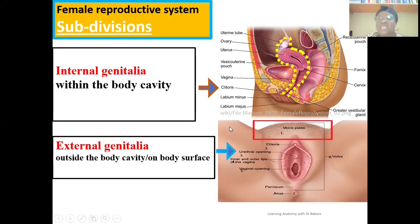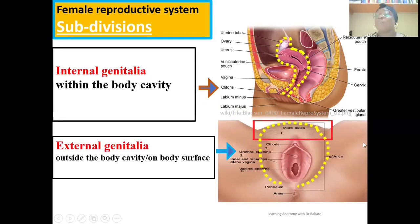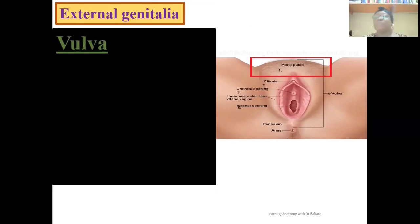Using the image by the side, you can see this region carved out in dotted yellow which has the external genitalia. If you look at this region, you see that it is located on the body surface. The female external genitalia can also be referred to as the vulva, and this region is made up of a number of soft structures.